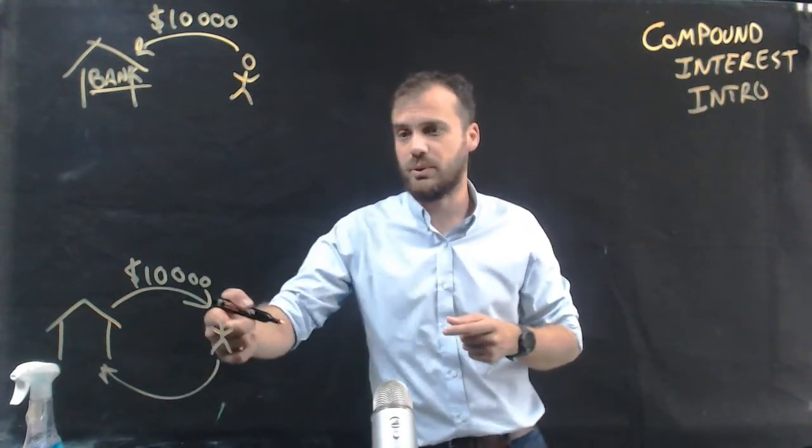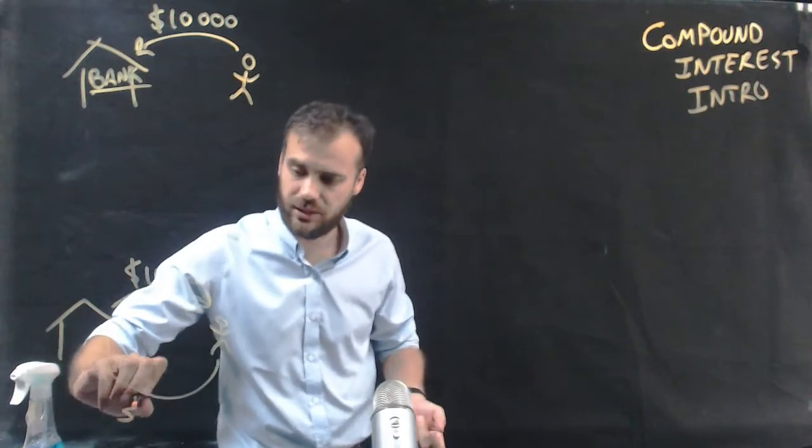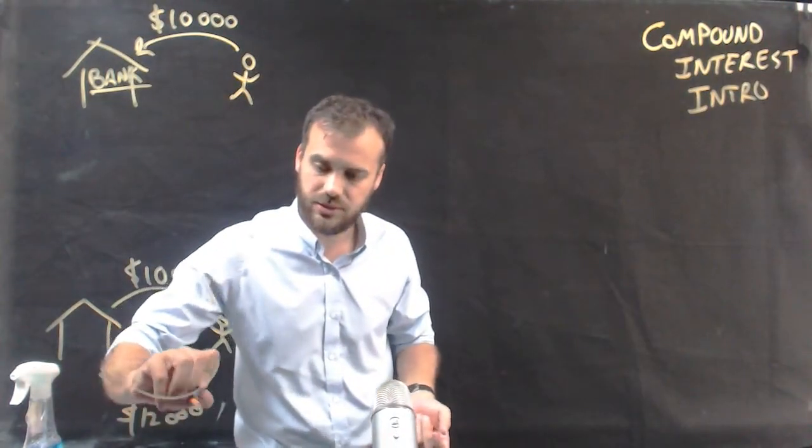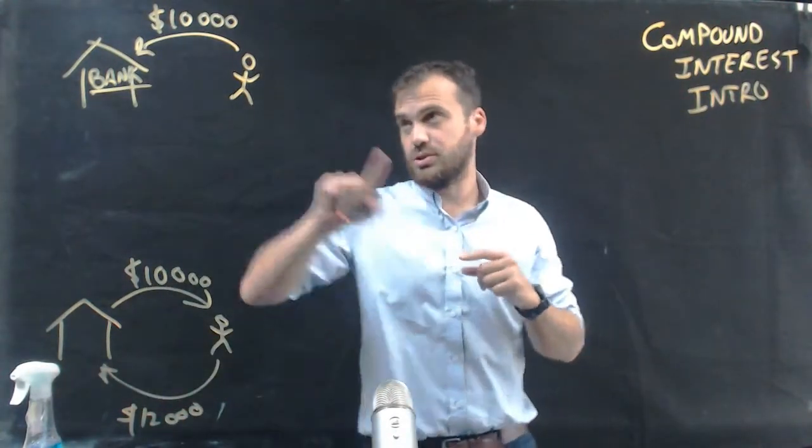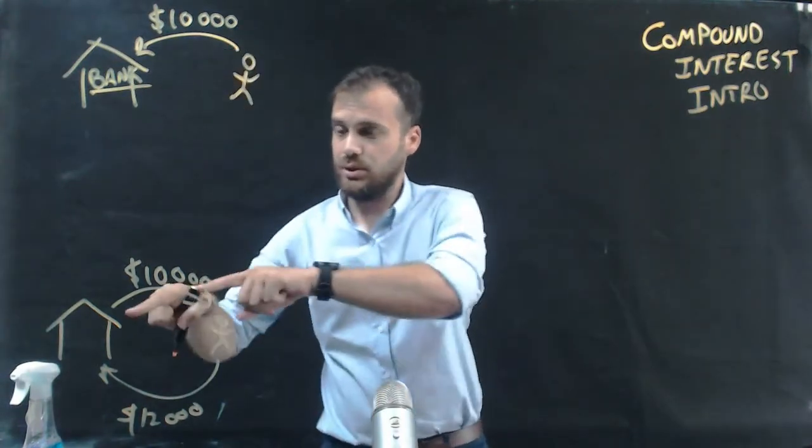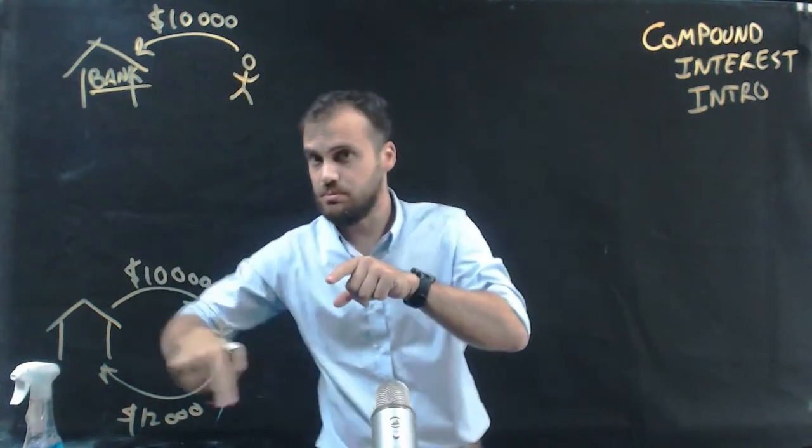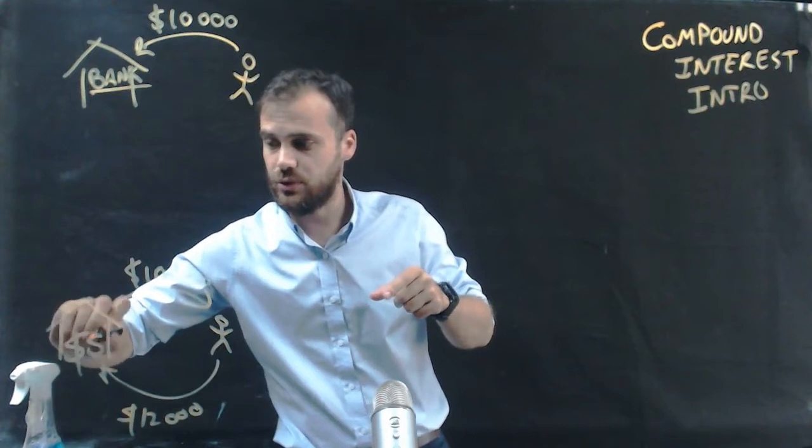With extra money so they won't give them back $10,000, they might give them back like $12,000. So the bank is using your money to lend to people to make money for the bank.